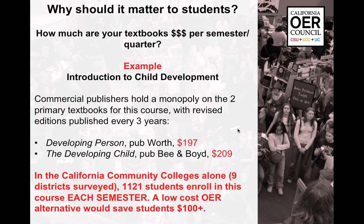Why should it matter to students? We asked students how much their textbooks cost per semester. For Introduction to Child Development, the two textbooks normally used cost $197 and $209, while the low-cost or free OER alternative costs students nothing. In California community colleges alone, 1,121 students enroll in this course each semester, so a low-cost OER alternative would save students $100, and the savings are exponential across the UC and CSU systems.